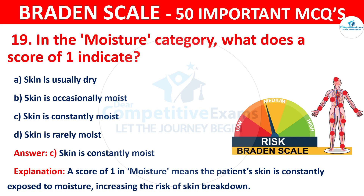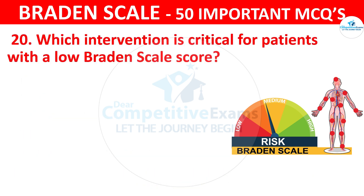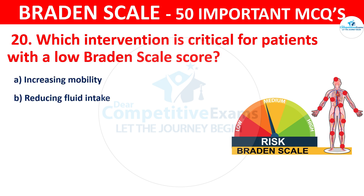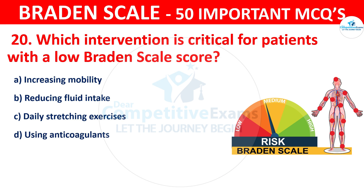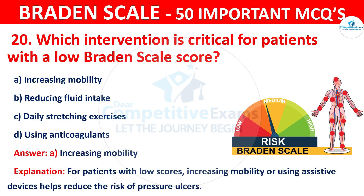Question number twenty: Which intervention is critical for patients with a low Braden scale score? The options are increasing mobility, reducing fluid intake, daily stretching exercise, or using anticoagulants. The correct answer is A — increasing mobility. For patients with low scores, increasing mobility or using assistive devices helps to reduce the risk of pressure ulcers.